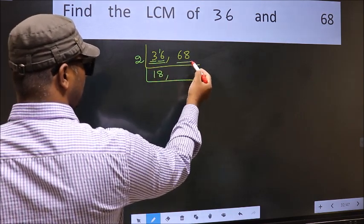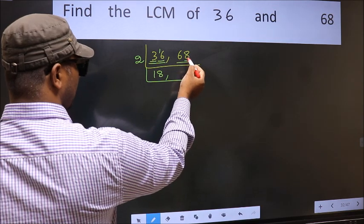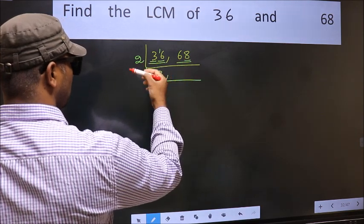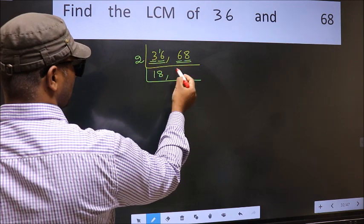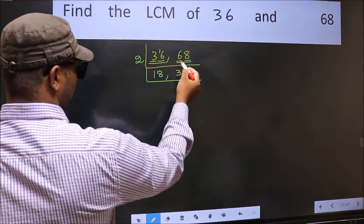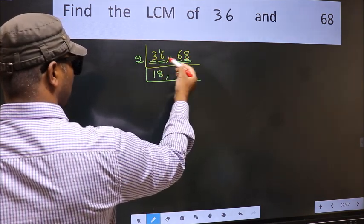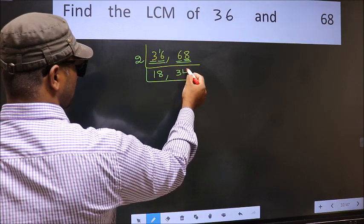The other number 68, last digit 8, E1. So this is divisible by 2. First number 6, when do we get 6 in 2 table? 2, 3 is 6. The other number 8, when do we get 8 in 2 table? 2, 4 is 8.